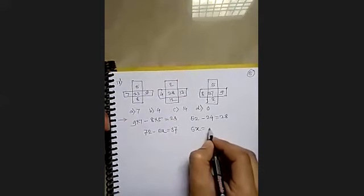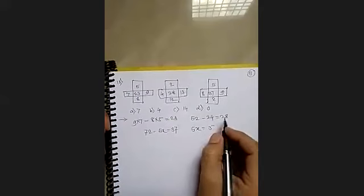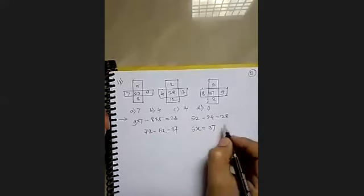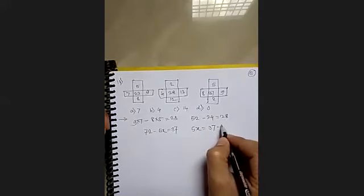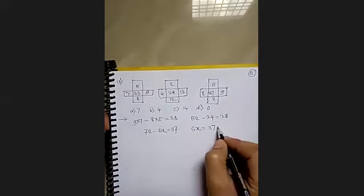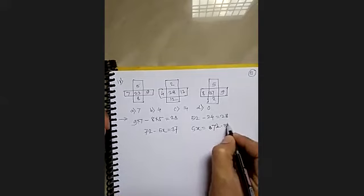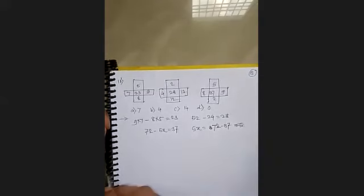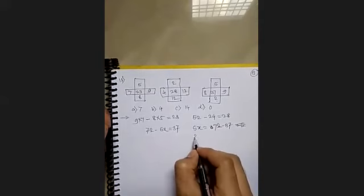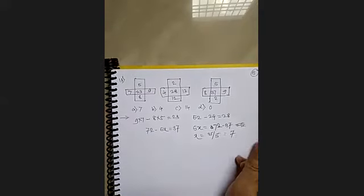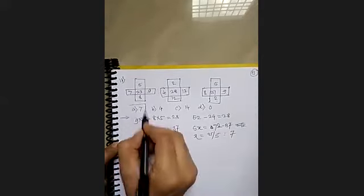So I can write it here, 72 minus 37 is equal to 5x. So here you can have x is equal to, 37 from 72 will give you 35, so here it is 7. And therefore your option is the answer. Fine, now yes.